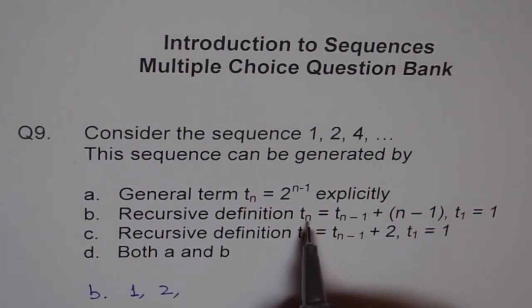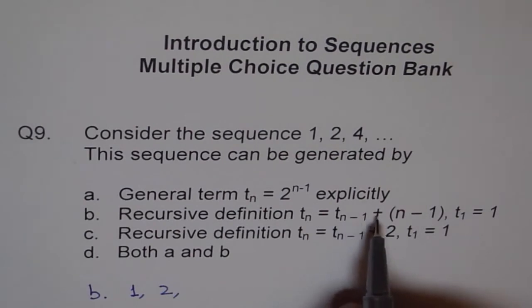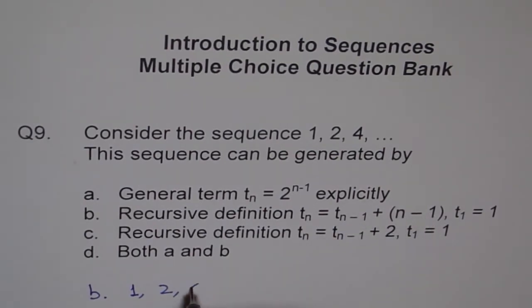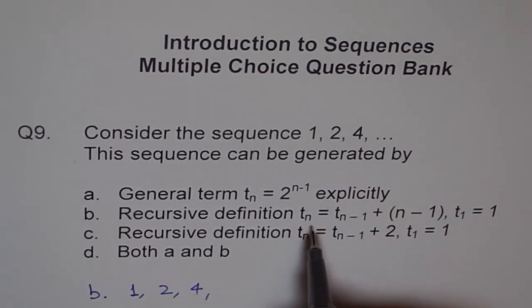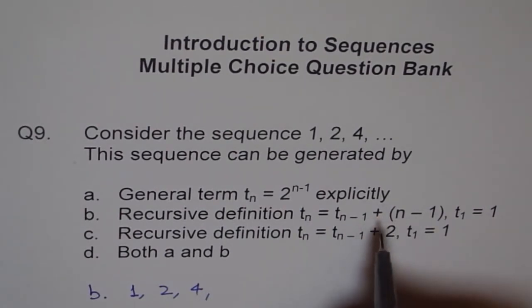If I put T_n as 3, the third term will be the previous term which is 2 plus 3 minus 1 which is 2. So 2 plus 2 is 4, so we do get 4 also. Let's check the fourth term. Fourth term here will be the previous term which is 4 plus 4 minus 1. 4 minus 1 is 3, so 3 more gives 7.